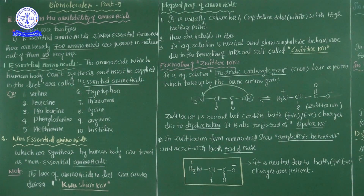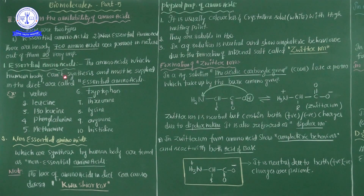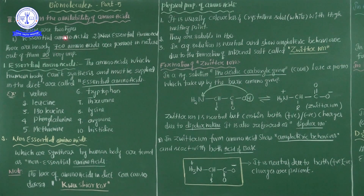In this session, the third and final classification of amino acids is based on the availability of amino acids — meaning where the amino acid is available. Based on that, there are two types: first, essential amino acids; second, non-essential amino acids.